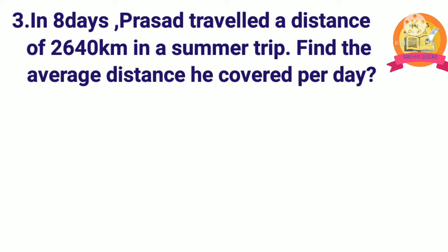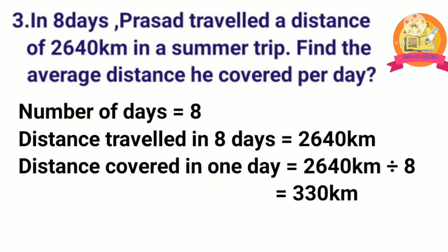Third problem: in 8 days, Prasad travelled a distance of 2640 km in a summer trip. Find the average distance he covered per day. Solution: number of days is 8. Distance travelled in 8 days is 2640 km. Distance covered in 1 day is obtained by dividing 2640 km by 8. After dividing, we get 330 km. Therefore, distance covered in 1 day is equal to 330 km.